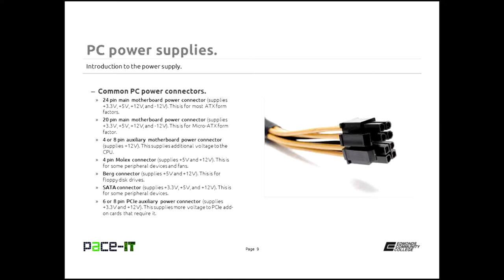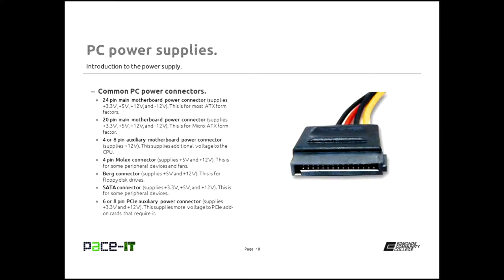Then there are berg connectors — these are kind of flat, they supply 5 volts and 12 volts, and the berg connector is actually for a floppy disk drive. You probably won't see too many of those in today's modern PCs. Then there is the SATA connector, which supplies 3.3 volts, 5 volts, and 12 volts, and it's used by peripheral devices like hard disk drives and optical drives. Finally, we have the 6- or 8-pin PCI auxiliary power connector, supplying 3.3 and 12 volts to PCI add-on cards — in particular, video cards, since the PCI bus just can't supply enough power for those.